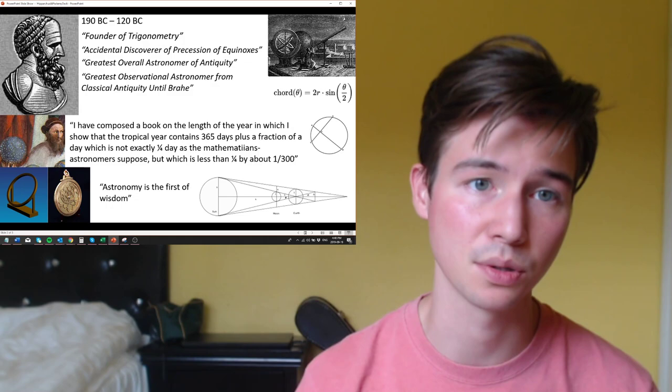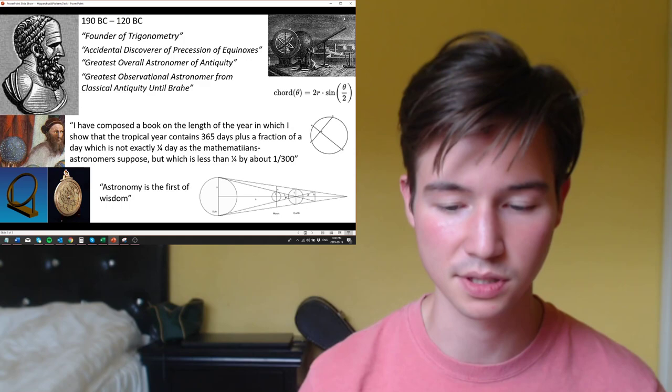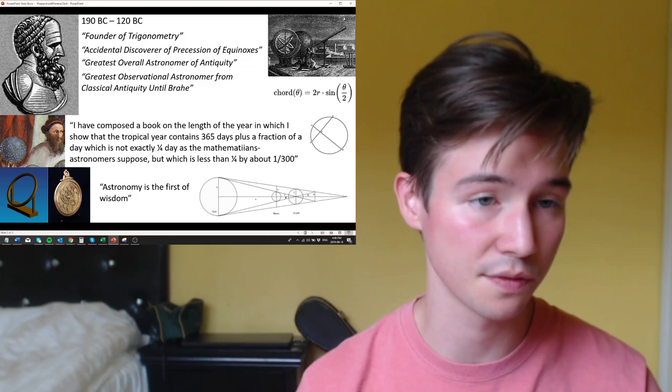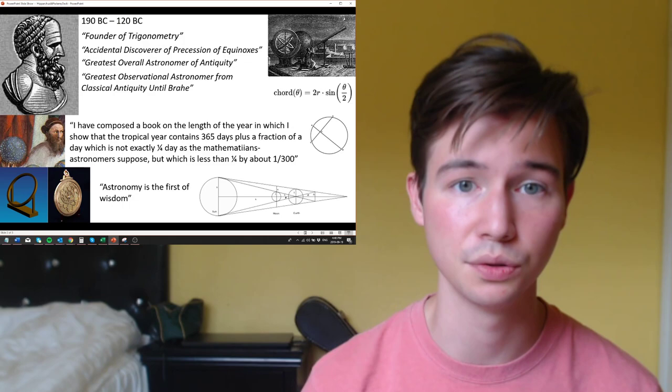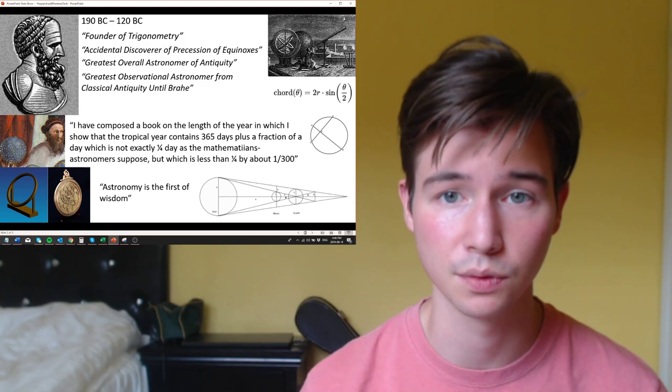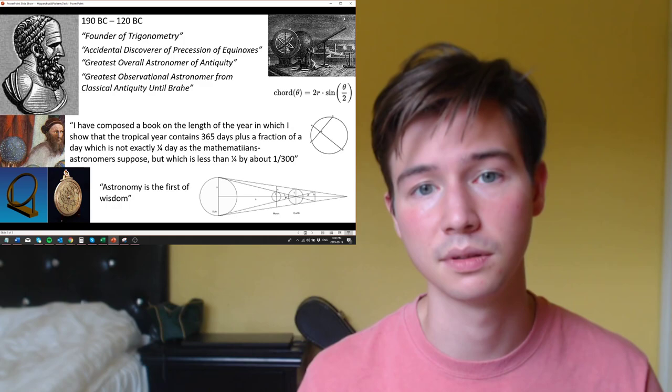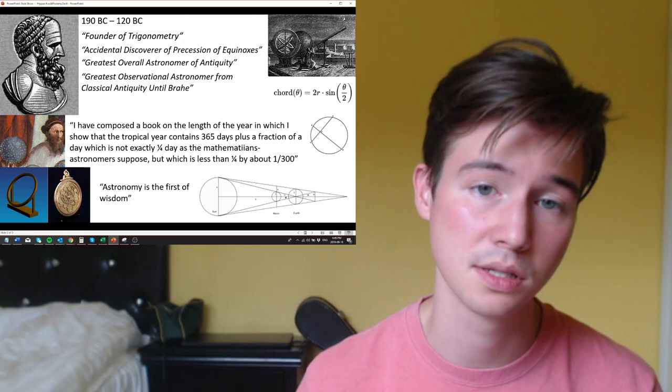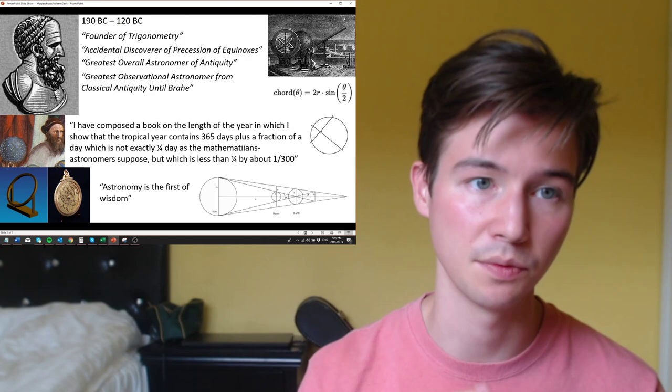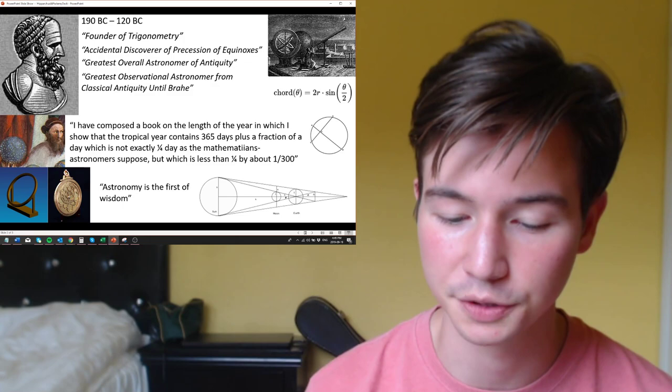It really doesn't make sense to talk about any sort of astronomy or astrology or even mathematics without first addressing Hipparchus. I think he has four titles which each individually justifies including him in this video series: founder of trigonometry, which is obviously a huge title to claim; the accidental discoverer of procession of equinoxes, obviously a very huge influence on astronomy; greatest overall astronomer of antiquity; and greatest observational astronomer from classical antiquity until Brahe. Just even being included in that group is very important. Nonetheless, worthy of the inclusion.